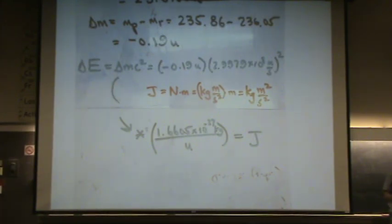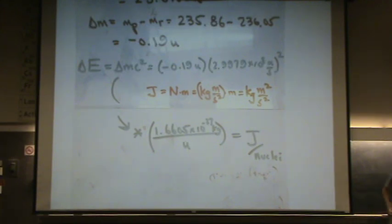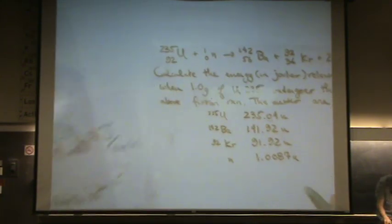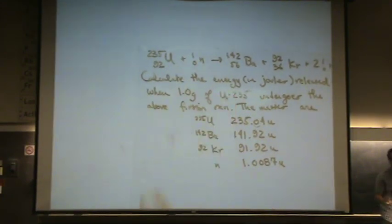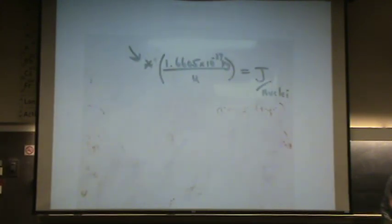I don't want that. I want one gram. So I really want joules per gram in this question. Okay? Not joules per nucleon. So, I have to do some more conversions. Okay?